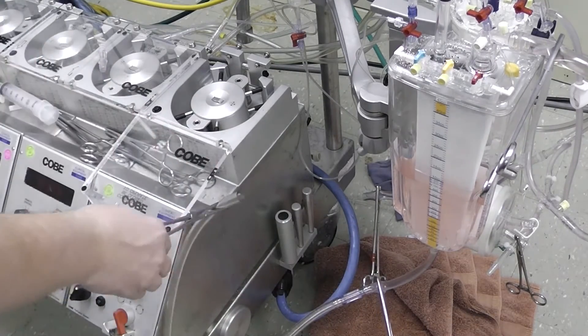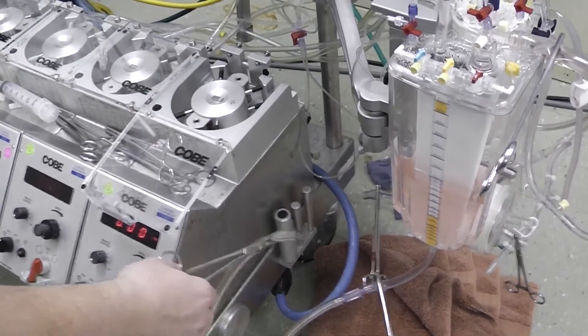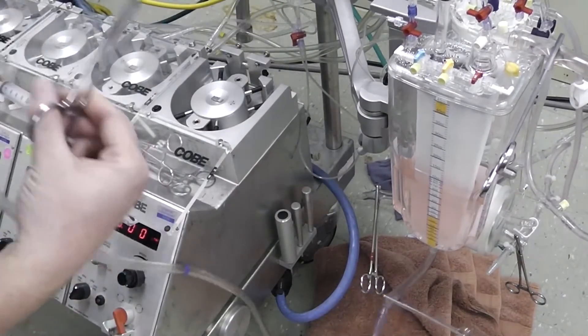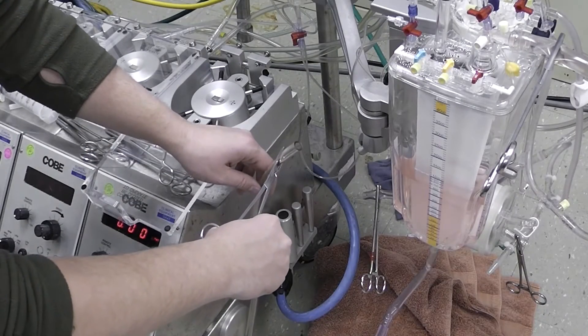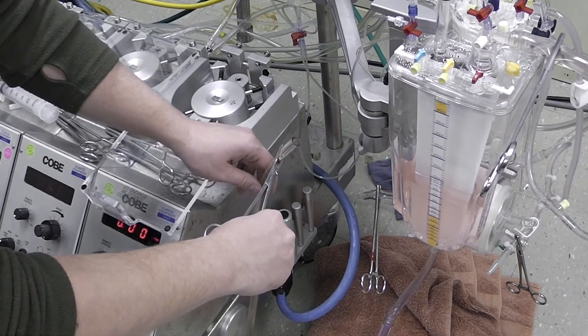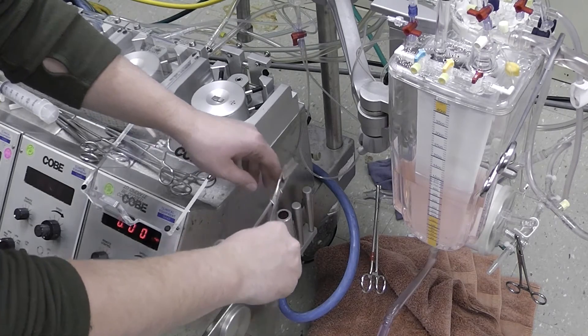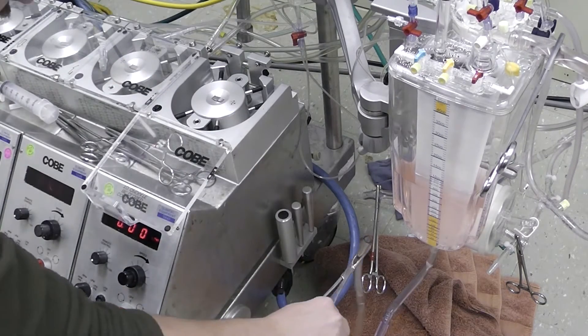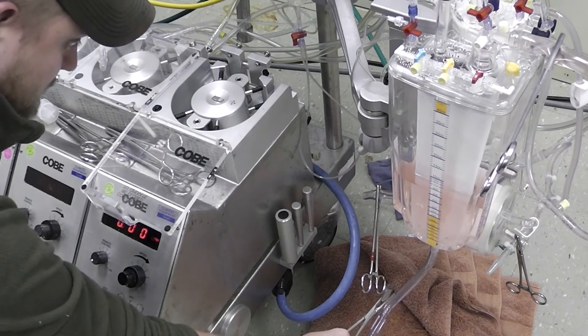Now we're going to start gravity filling this line so that this isn't all full of air. Open up that clamp and then start gravity filling this line until I get fluid almost all the way up to the top.